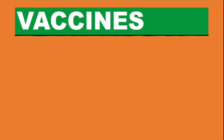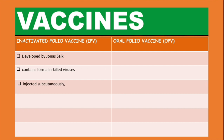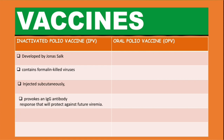Polio has two vaccines: the inactivated polio vaccine, or IPV, and the oral polio vaccine, or OPV. The IPV was developed by Jonas Salk and contains formalin-inactivated viruses. It is injected subcutaneously and provokes an IgG antibody response that protects against future viremia. Unfortunately, it does not provide intestinal immunity.